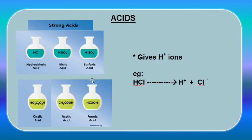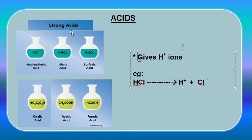Let us learn about acids. Acids give H+ ions, meaning hydrogen ions. In the last class we learnt about organic acids available in food items like oxalic acid, lactic acid, malic acid, and tartaric acid. Here the examples being shown are mineral acids, which are available in the laboratory and are made from mineral sources.